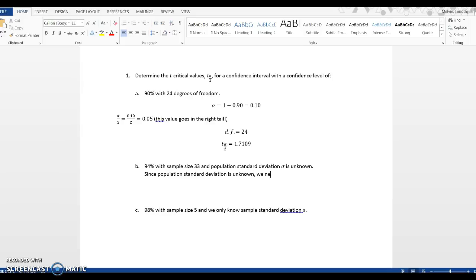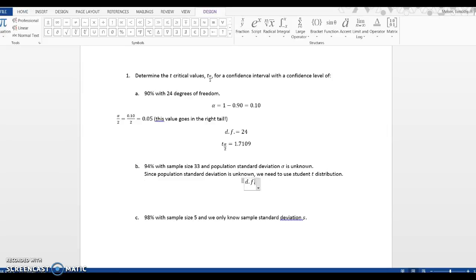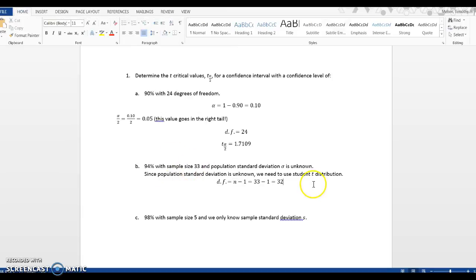Since population standard deviation is unknown, we need to use student T distribution. We have degrees of freedom is n minus 1 for one sample, so this is 33 minus 1, so I end up with 32 degrees of freedom.